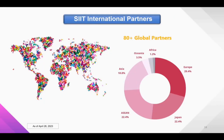We have a lot of university partners around the world — more than 80 universities. Around 30% are from Europe and 20% from Japan and 20% from Asia. We have many partners in Japan because one of the founders of SIIT is connected to Japanese business organizations, so we have a good relationship with Japanese universities.